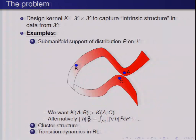The general question is: we have a space X, and we need to define a kernel in that space which captures some notion of intrinsic structure in data drawn from that space. Common physical examples include manifold structure in data drawn from a distribution P, where X has a sub-manifold. For instance, in this picture, you might want to find a kernel that learns that point A and B are more similar than A and C, even though A and C are close in ambient space. Alternatively, you can view this as a problem where the norm in the RKHS has some notion of smoothness with respect to that sub-manifold.